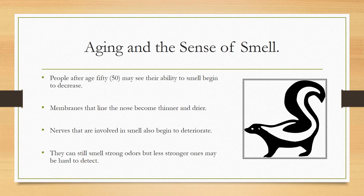Regarding aging and the sense of smell: after age 50, a person's ability to smell may begin to decrease. The membranes lining the nose become thinner and drier, and the nerves involved in smell begin to deteriorate. Older adults can still detect strong odors such as a skunk, but weaker ones may become harder to detect.